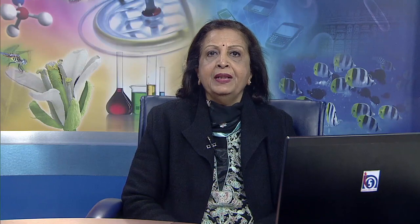Next is storage. Storage systems can vary in complexity depending on one's needs. An effective system can involve a 250-litre drum fed by rooftop gutters and downspouts. Debris and leaves should be filtered before storing the water by placing screens or coarse mesh over gutters or downspouts. Water kept in tanks or systems should also be covered to minimize algal growth and eliminate the potential for mosquito breeding. Placing floating lids on the storage tank is an effective solution.